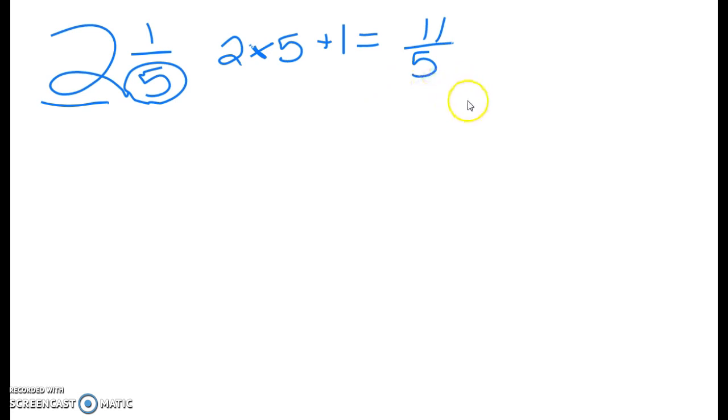We can do this in reverse as well. So if you had the number 13 over 3, this is an improper fraction. We can turn this into a mixed number.